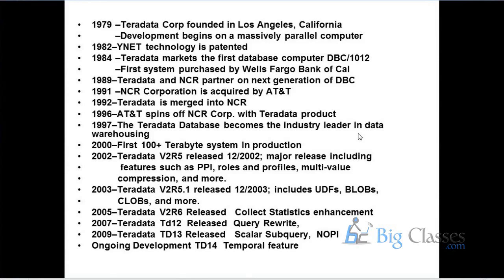In V2R6, correct statistics was introduced to enable better optimization and request processing. Then query rewrite — a prominent feature in TD12. Other features like Scalar Subquery and NOPI were introduced in TD13. In TD14, temporal and columnar features were introduced. TD14 has been released to the market and many major commercial and retail clients are currently working in TD14 environments. TD15 is currently being developed.